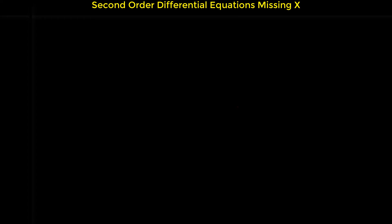In this video, I'm going to show you an example of a second-order differential equation missing the x-term. Consider this differential equation: y double prime plus y prime cubed times e to the 2y equals 0. As you can see, in this differential equation, we don't have any term with x — variable x doesn't appear.